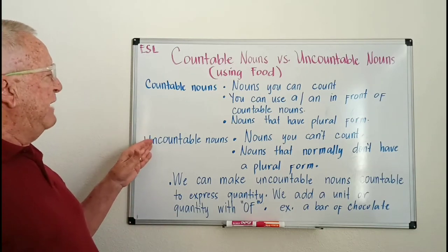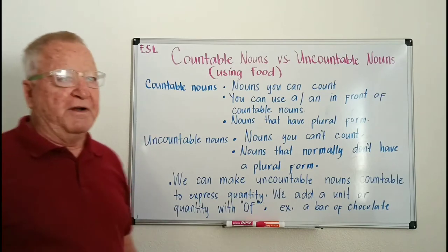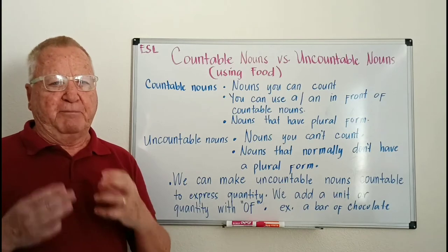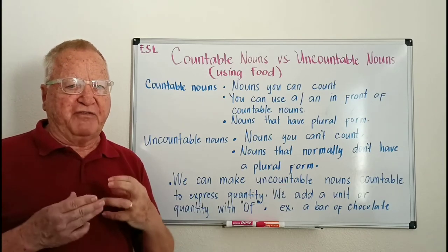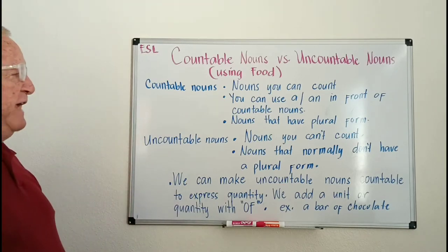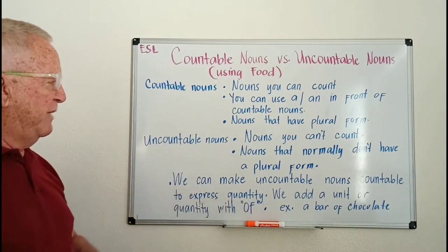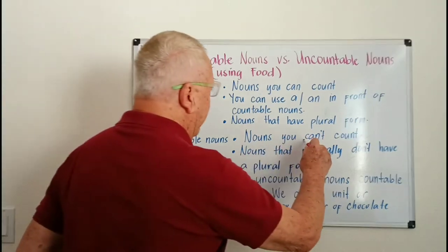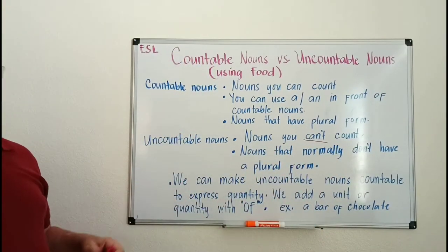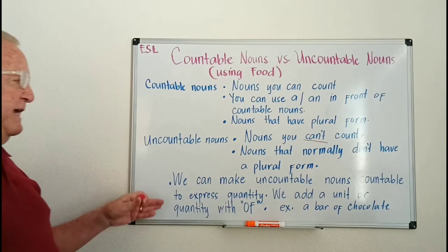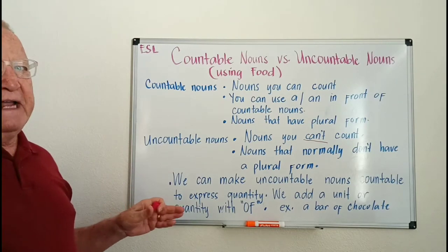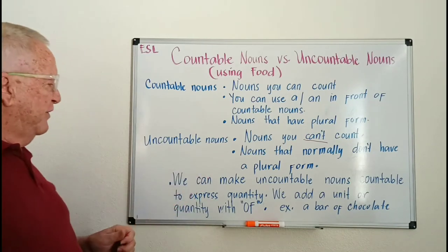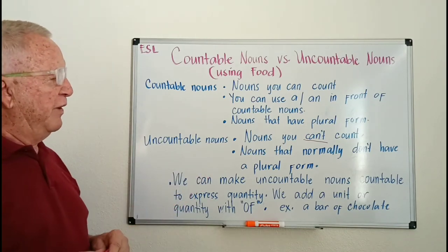Non-countable or uncountable nouns — also called mass nouns — are nouns you can't count and normally don't have a plural form. We can make an uncountable noun express quantity by adding a unit with the word 'of.' For example: a bar of chocolate.